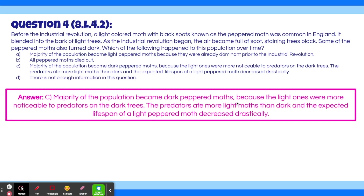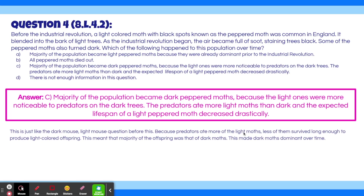The answer is C — majority of the population became dark peppered moths. This is just like the dark-mouse-light-mouse question. Because predators could more easily see the light moths and ate more of them, fewer survived long enough to produce light-colored offspring. This meant that majority of the offspring were dark moths, making dark moths dominant over time.